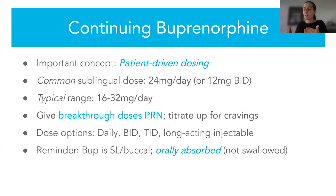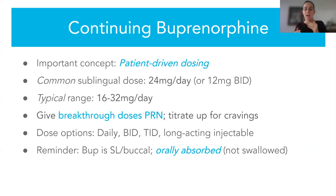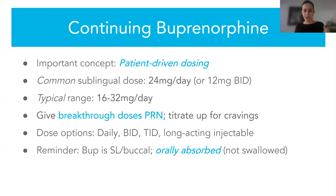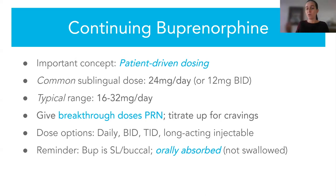If the person's dose is insufficient — say the ED gave them 16 milligrams and they're still feeling withdrawal and having cravings — we're going to go up on their dose inside the hospital, titrating up to control the cravings and withdrawal, usually in the range of 16 to 32 milligrams. You can dose daily, TID, or use a long-acting injectable. TID dosing is nice if somebody is also having pain, since the analgesic effect of buprenorphine is about six hours.